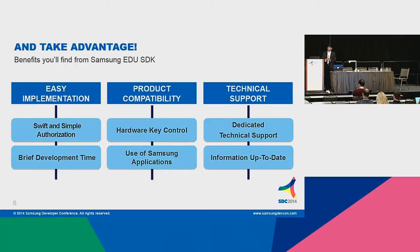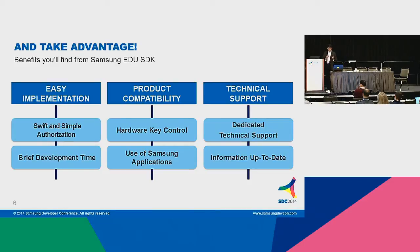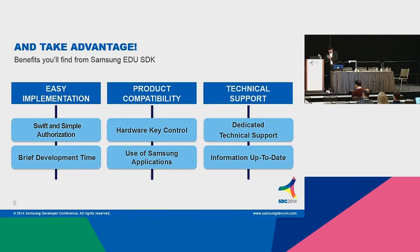The first benefit is easy implementation — a simple way of authorizing. You log on to the Samsung Mobile B2B site and become a partner, then download the EDU SDK and get a product license key to deploy your application. Additionally, you can reduce your development time significantly — at least by 2x. The first Samsung School Solution was deployed without SDK; now developing with SDK as an upgraded version shows a big difference in reduced development time.